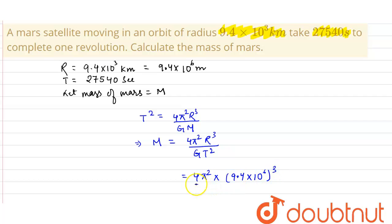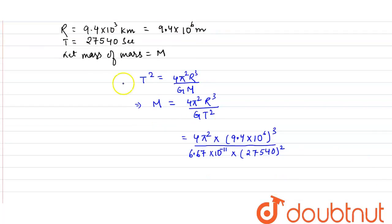...divided by the value of G is 6.67 × 10⁻¹¹ into the time period is 27,540 whole squared, okay. So on solving this...